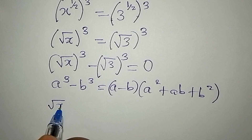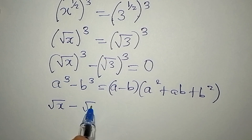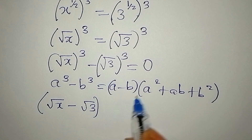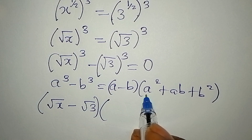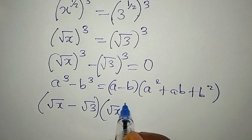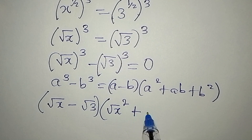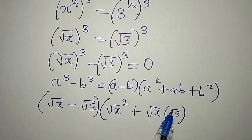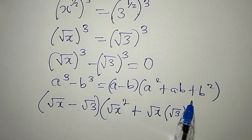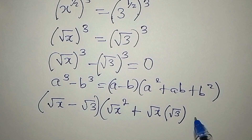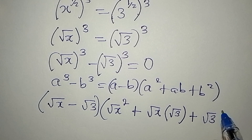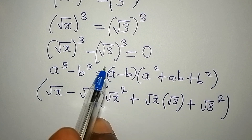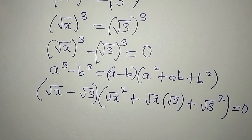So our a is square root of x. I'm going to write: square root of x minus square root of 3, then in the second factor I have a squared which is square root of x to the power of 2, then plus ab which is square root of x multiplied by square root of 3, then plus square root of 3 to the power of 2. Everything is equal to zero.